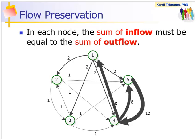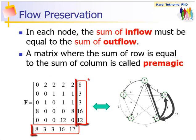In each node, the sum of inflow must be equal to the sum of outflow. If we put the flows in the network into a matrix, the sum of rows will be exactly equal to the sum of columns. A matrix where the sum of row is equal to the sum of column is called pre-magic.